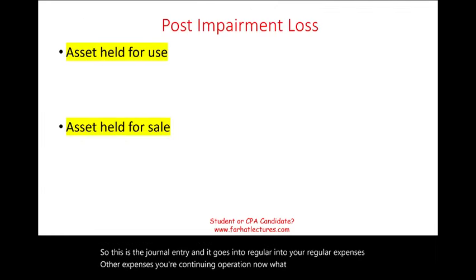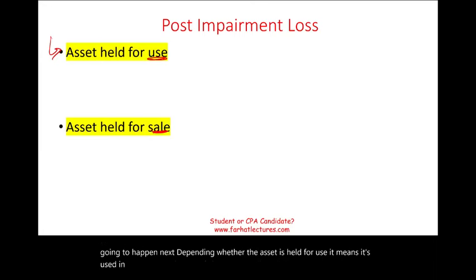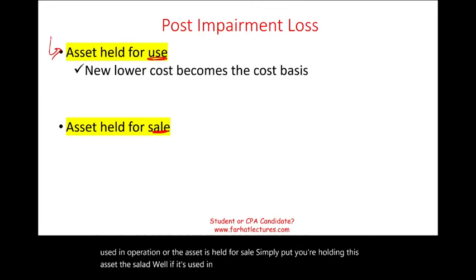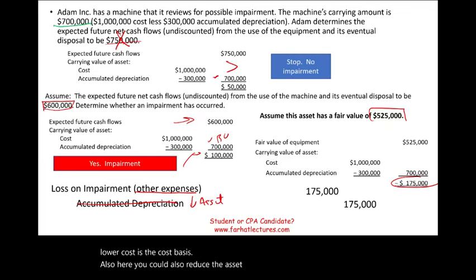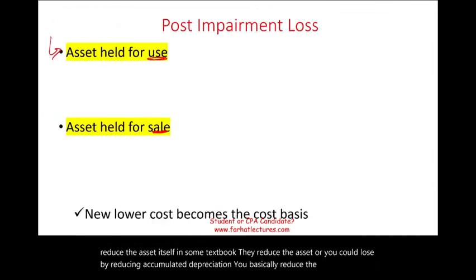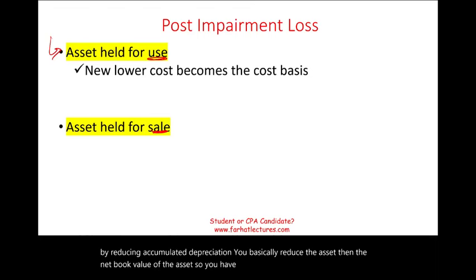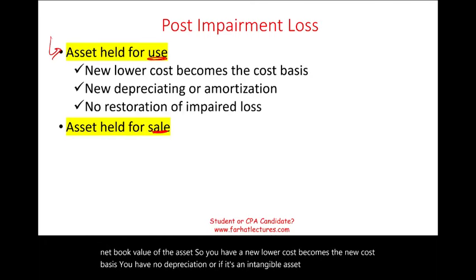What happens post-impairment? It depends on whether the asset is held for use in operations or held for sale. If held for use, the new lower cost becomes the new cost basis, new depreciation or amortization is calculated, and there is no restoration of impaired losses — even if the asset's value recovers, you cannot write it back up.